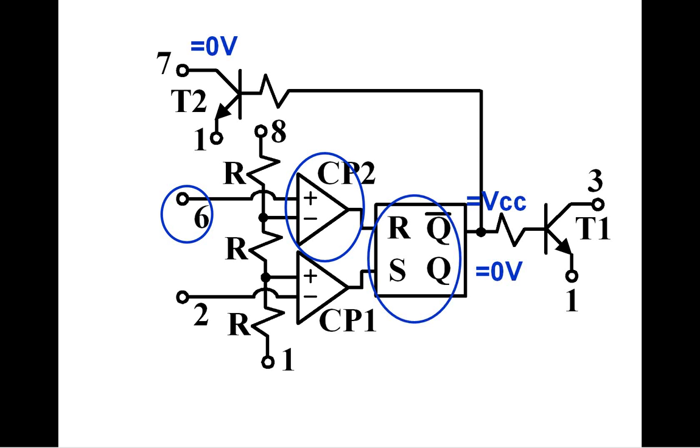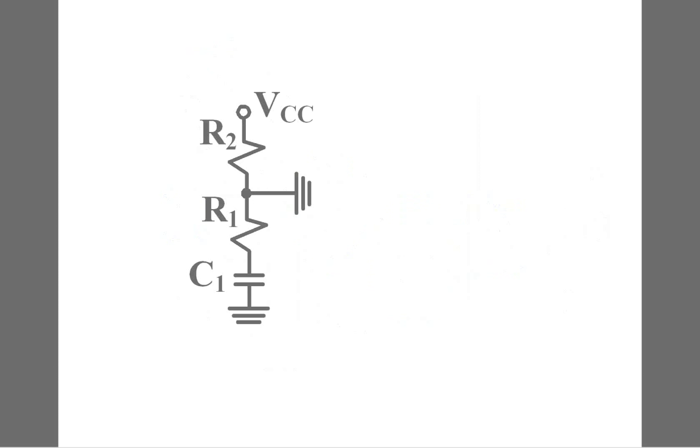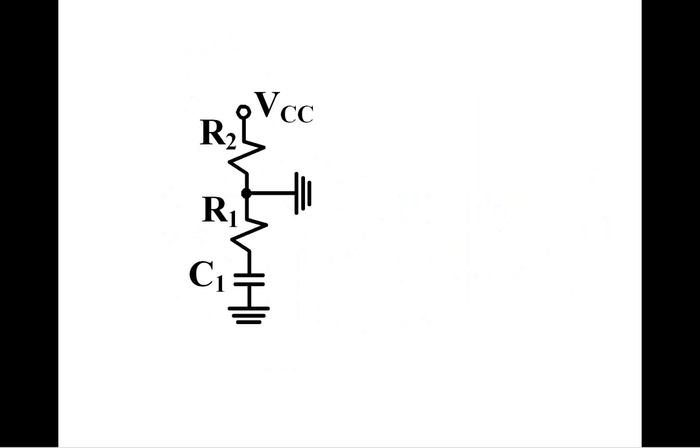Discharging transistor is active for very short time and then goes to saturation, keeping V7 close to zero. So equivalent circuit is now like this. Capacitor is discharging exponentially through R1 resistor. Discharging lasts until one-third of Vcc is reached.